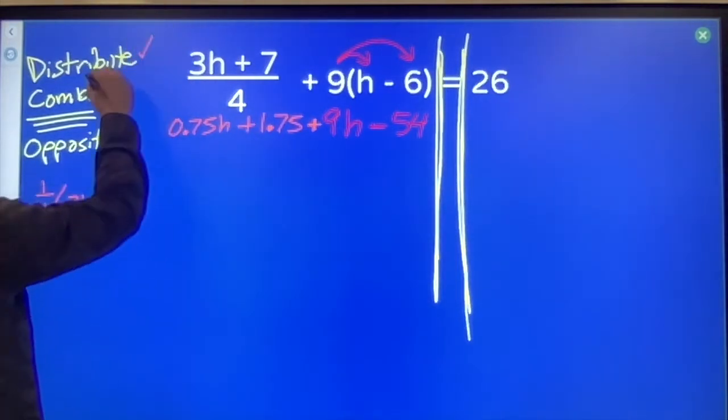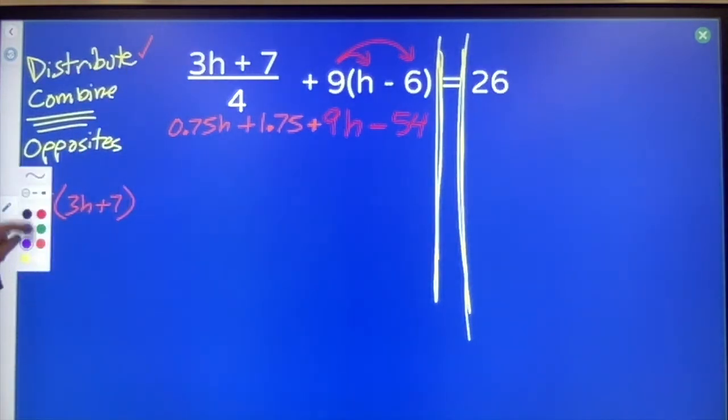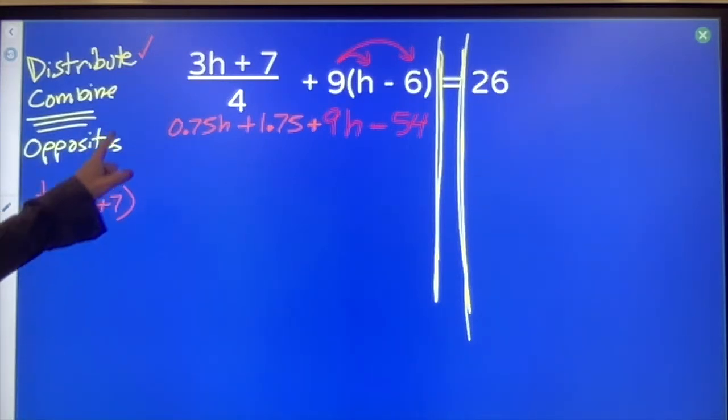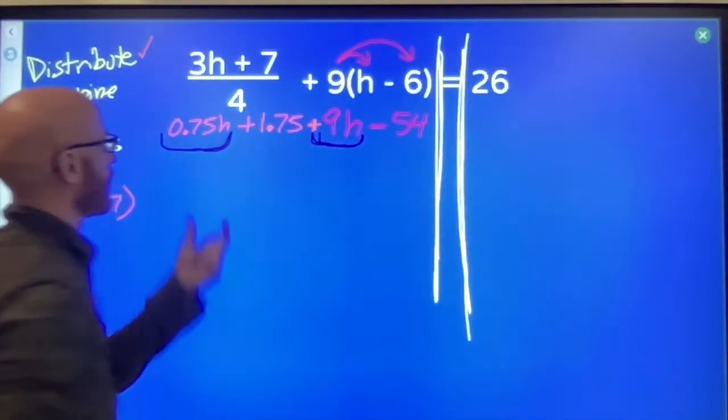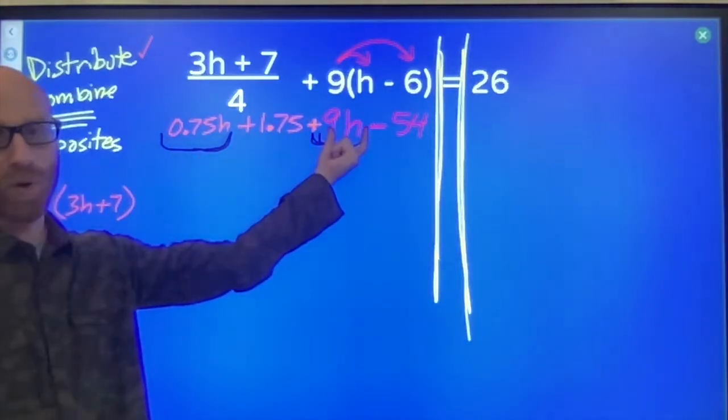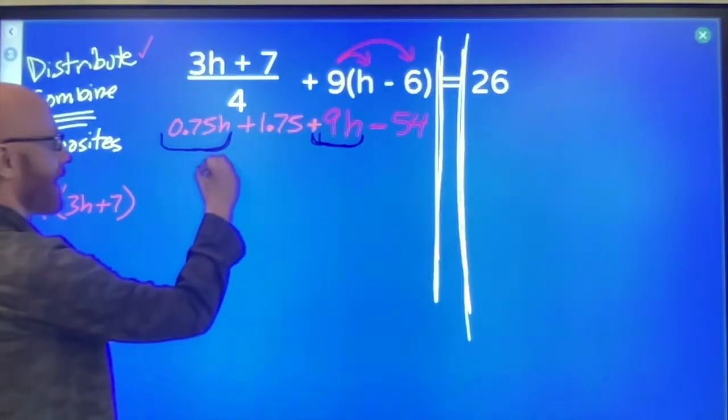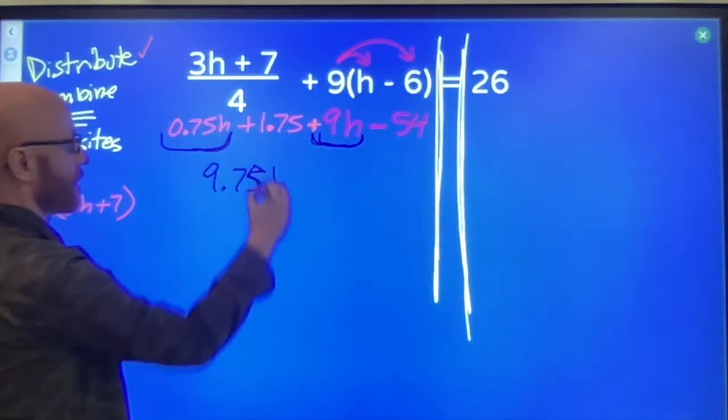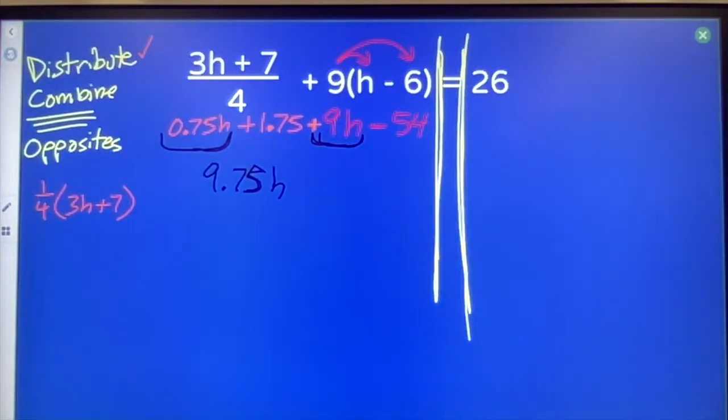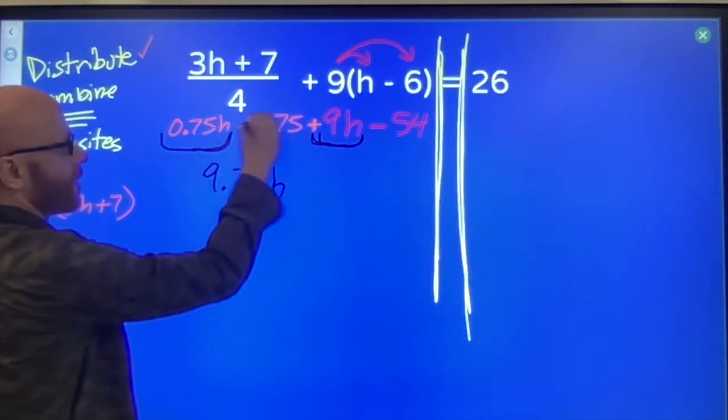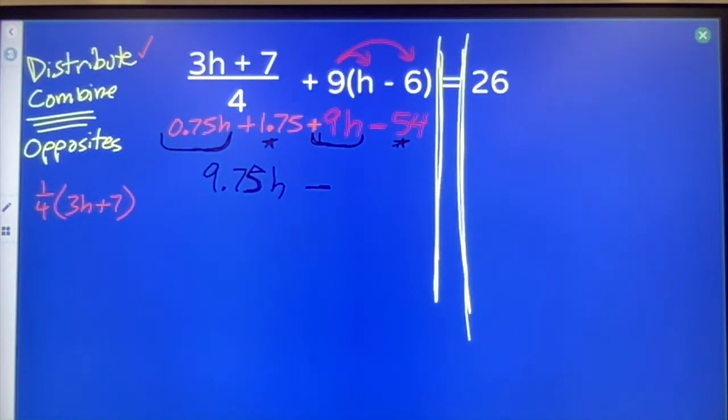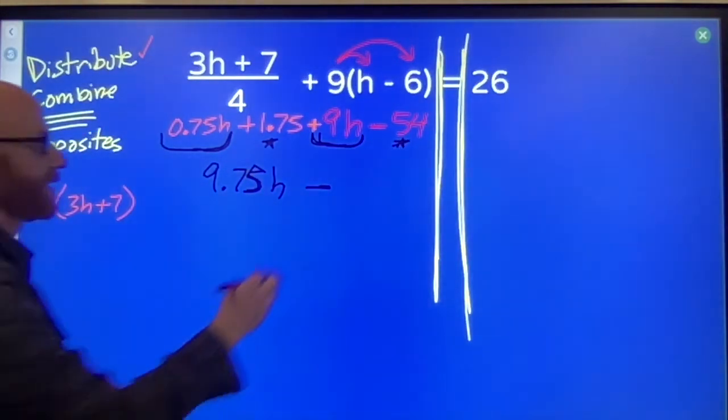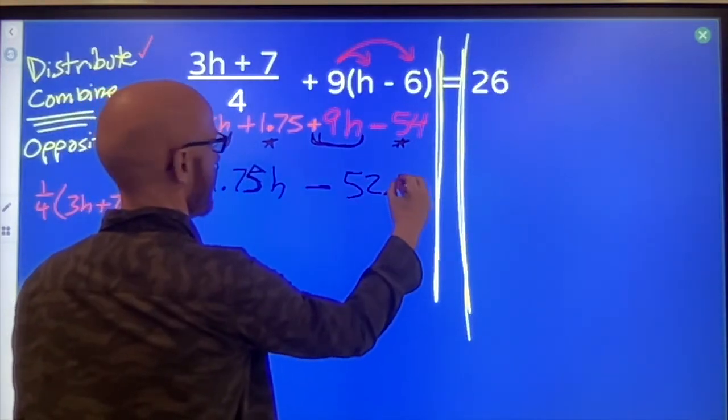Second step, combine things that are alike. I've got 0.75 h's and I've got nine more h's. Those things are alike. All together, we've got 9.75 h's. These things are also alike. 1.75 minus 54. Together, that's a minus 52.25.